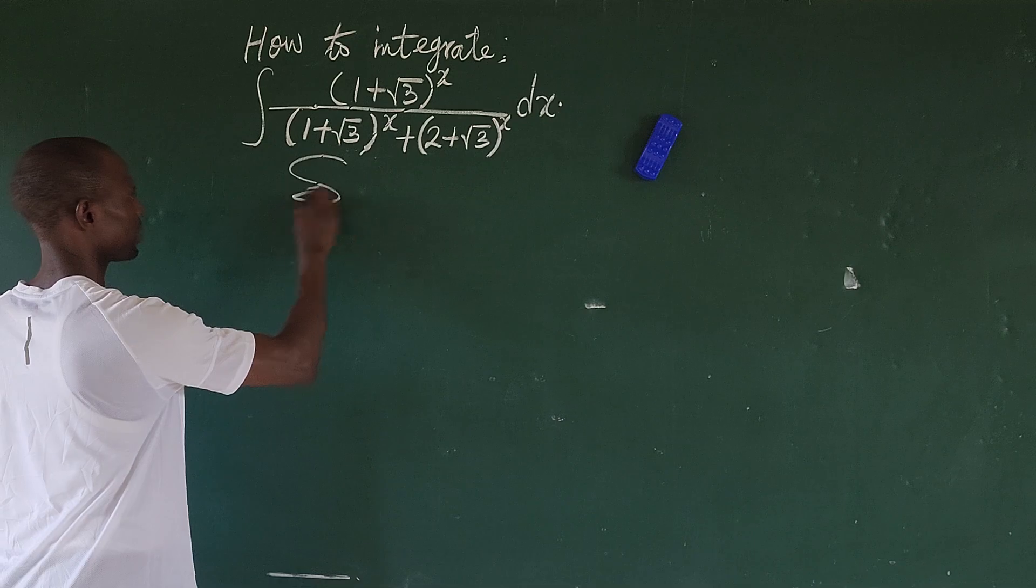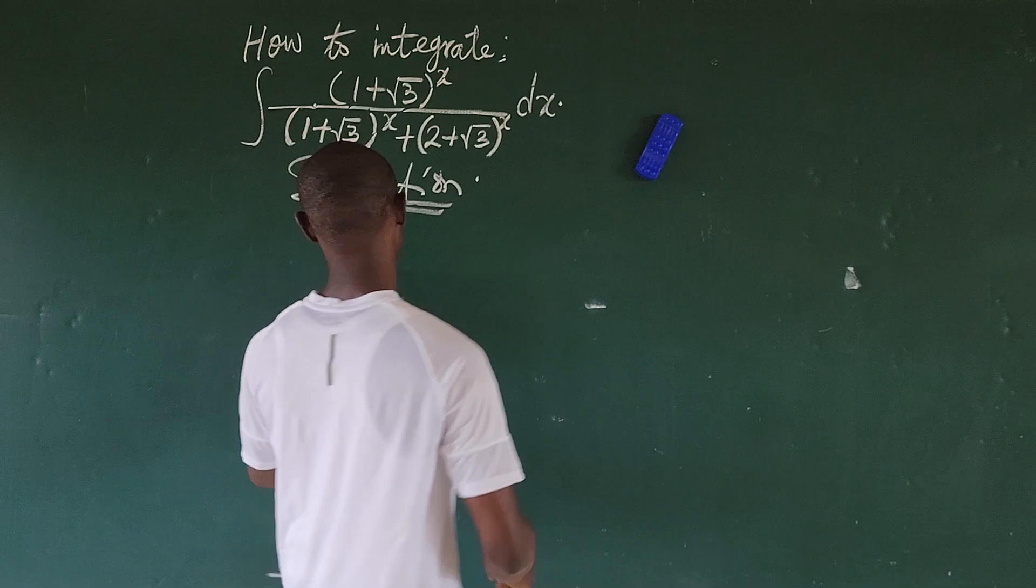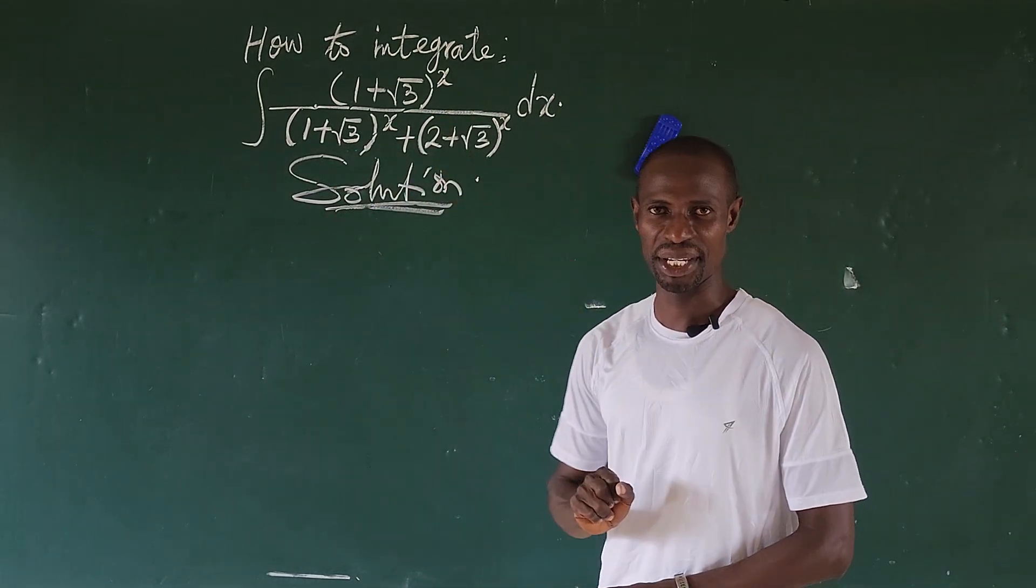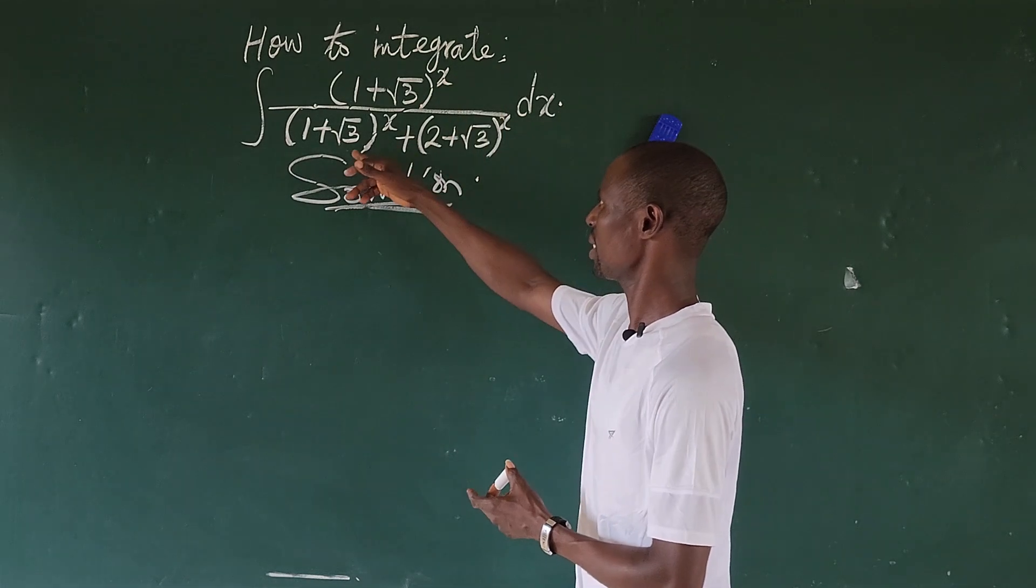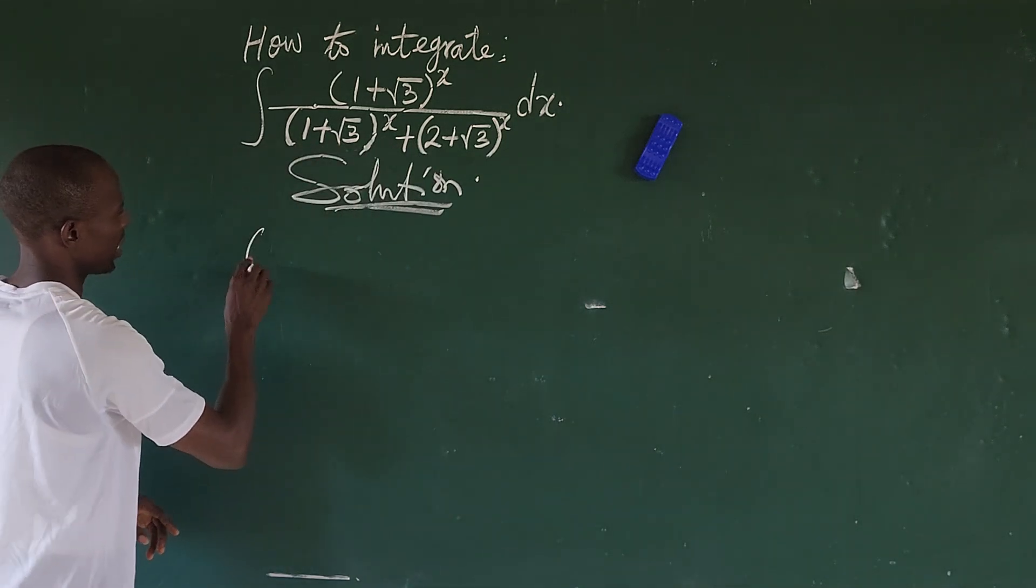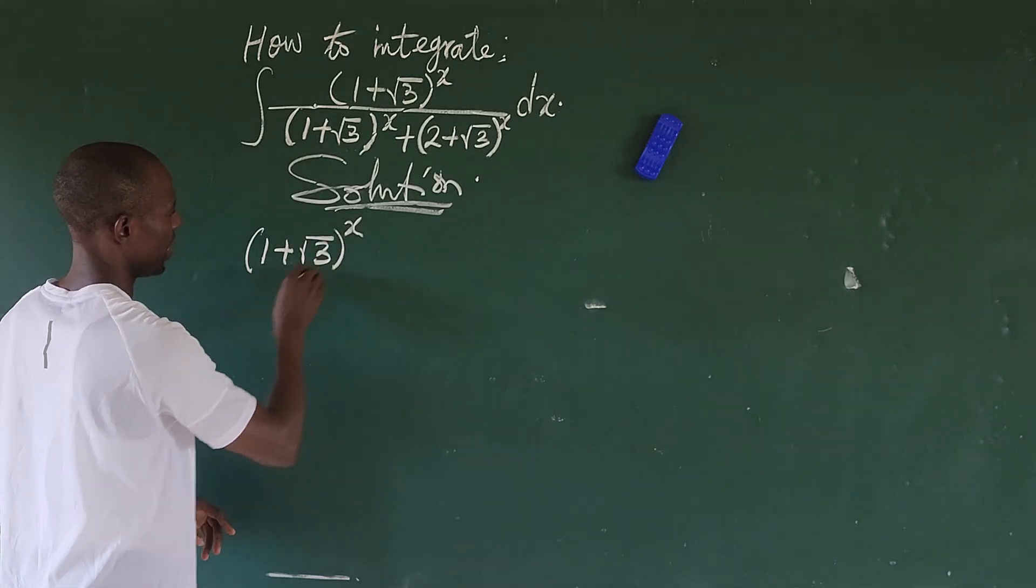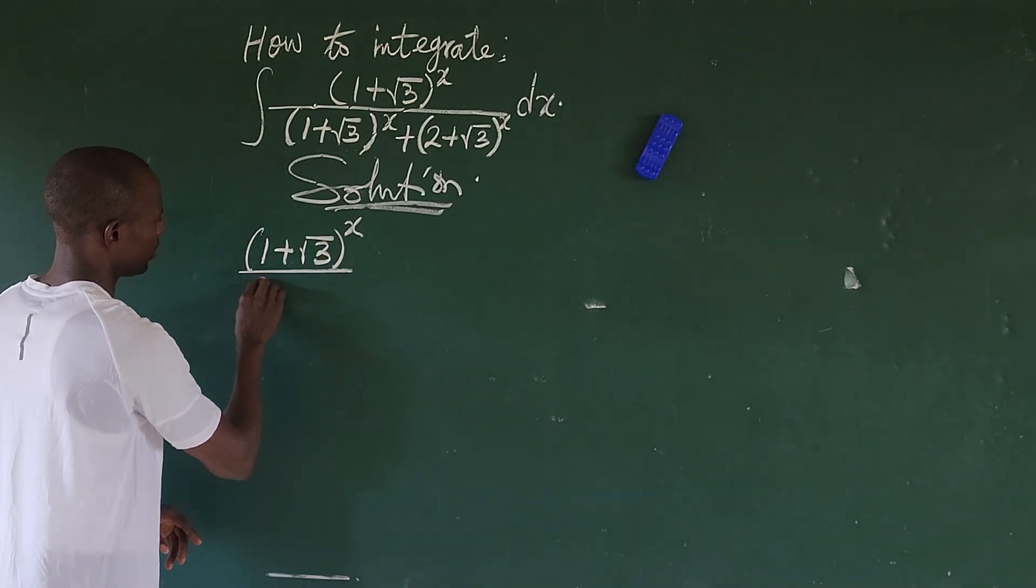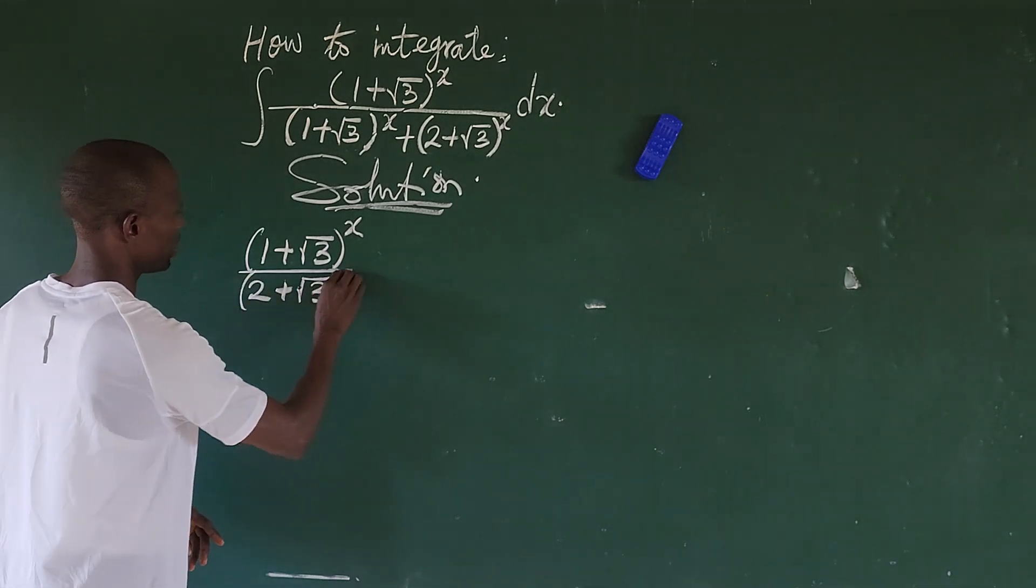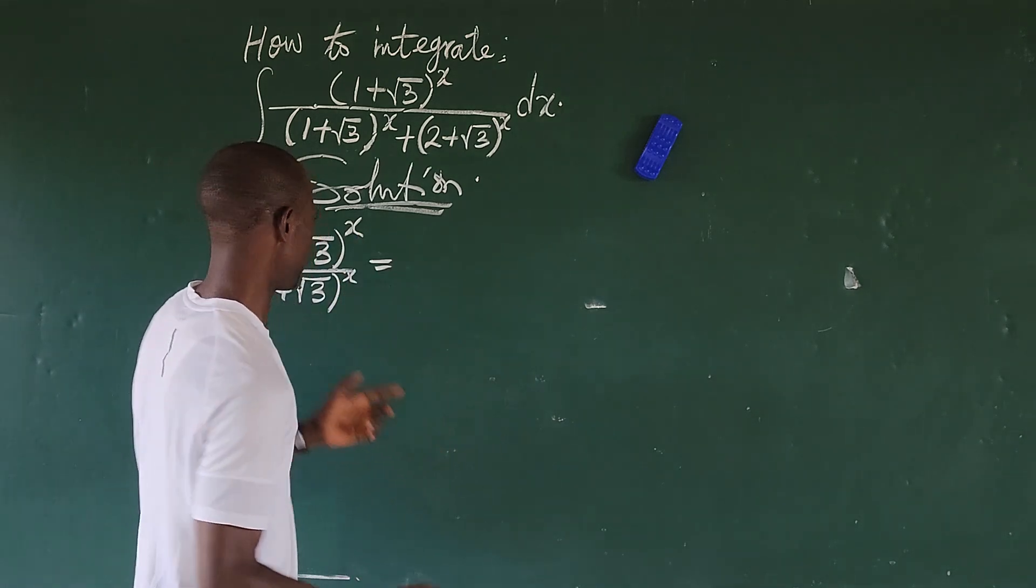So from here we take our selection. Now if you look at this here, you discover that what we have here is the same thing we have here. So this is the only different term here. I want to divide both these and these by this different term. So this is an algebra here: (1 + √3)^x all over (2 + √3)^x. Since the exponents are the same, let's keep the exponent as they are.